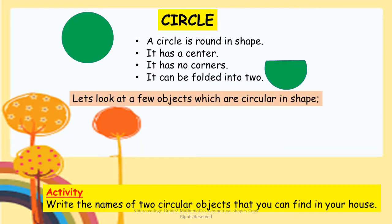Circle: A circle is round in shape. It has a center. It has no corners. It can be folded into two equal halves.